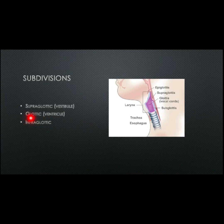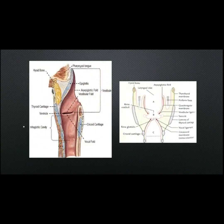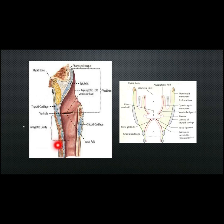Now let's talk about its subdivisions, divided into three parts: supraglottic or the vestibule, glottic or the ventricle, and infraglottic part. The supraglottic part extends from the epiglottis to the vestibular fold. The glottic extends from the vestibular fold to the vocal fold. The infraglottic extends from the vocal fold to the lower part of the cricoid cartilage.